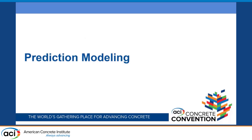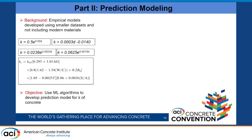The next part was prediction modeling. Existing empirical models in literature are mostly based on dry density of concrete and do not consider all other factors. These older models were also developed using materials that are no longer representative — SCMs, fibers, and other modern materials were not included. The objective was to develop a dataset and use machine learning algorithms to build a more comprehensive prediction model.